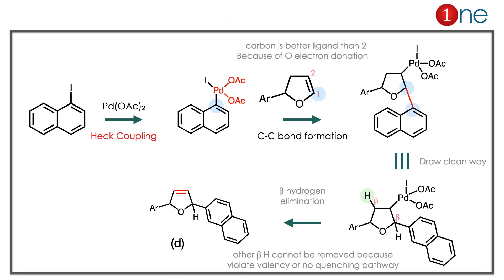The starting material contains iodine and palladium — you might guess it is a Heck-type coupling. The complex forms first, then couples with the alkene of the other starting material. The first carbon is the better ligand due to oxygen donation, improving electron density at that position, so the attack happens at position one, not two, forming the new C–C bond. Then, with palladium and two beta-hydrogens, the green hydrogen is removed to give the possible double bond, while removing the other beta-hydrogen would violate valence. So the answer is D. Key lessons: palladium with an aryl halide gives Heck coupling; choose regioselectivity based on electron density; and choose beta-hydrogen elimination based on stability and the viable quenching pathway.